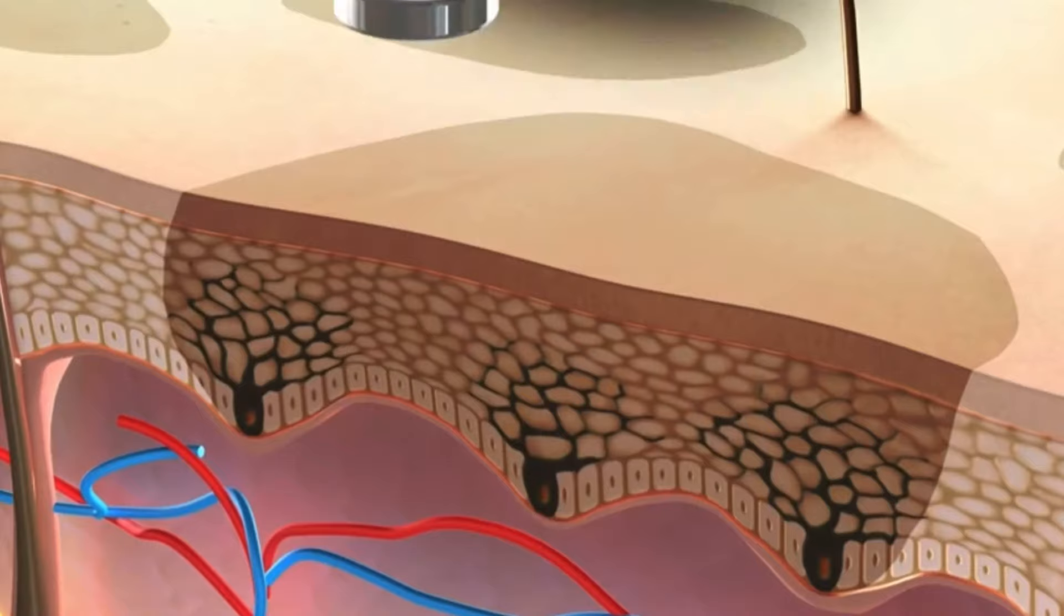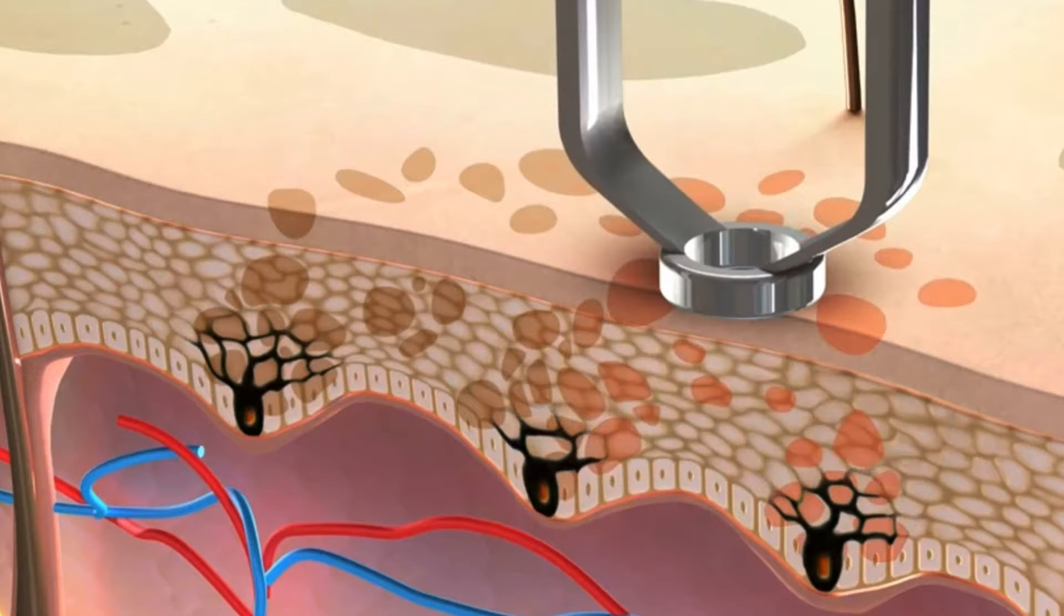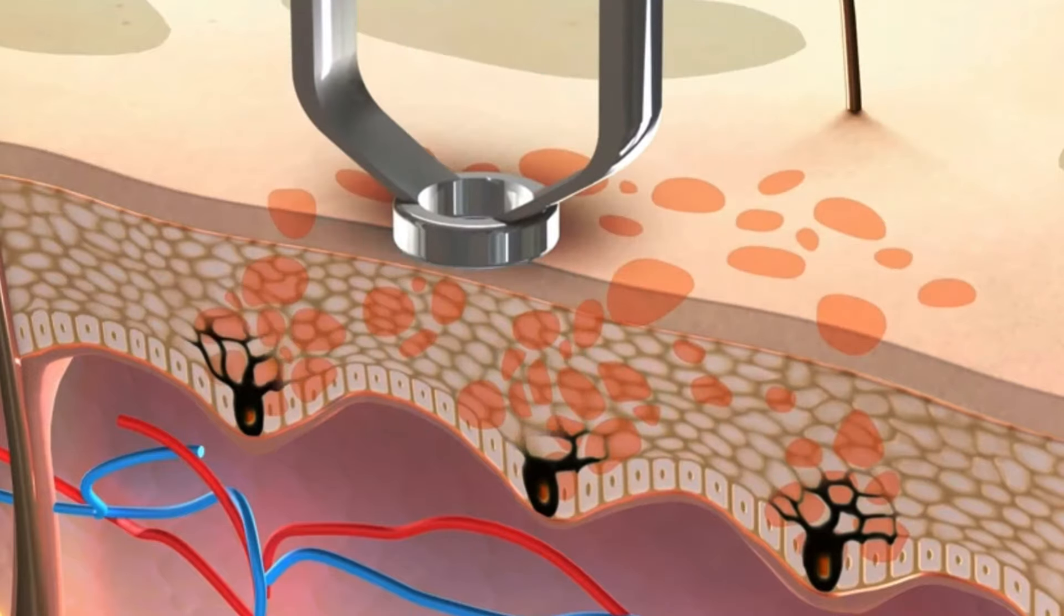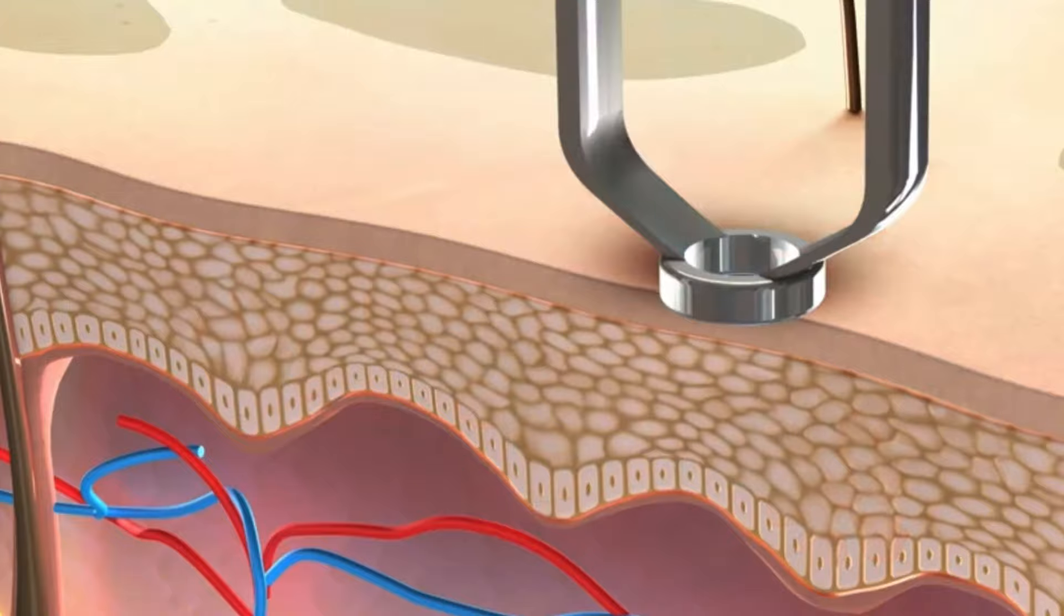As we look even more closely, we can see the pigment in the skin cells selectively absorbs the long pulsed laser energy. The melanin is damaged with sequential laser shots without damaging the surrounding normal tissue.